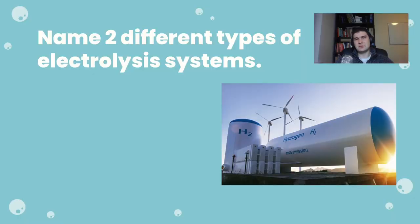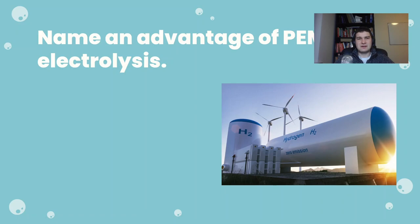Let's finish up with a couple of questions here. Question number one, name two different types of electrolysis systems. And I'll give you a couple of seconds to think about the answers. Okay, so we can talk about PEM, we can talk about alkaline, and if you looked at my previous slide, you will also remember solid oxide, but any of those two will do.